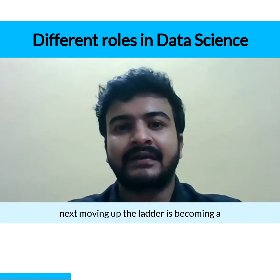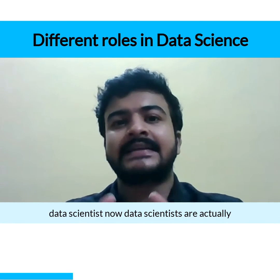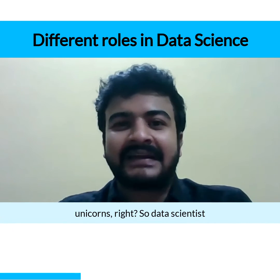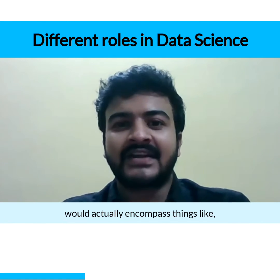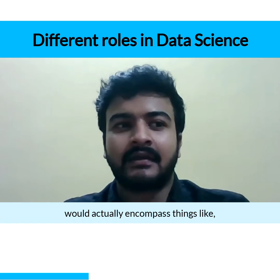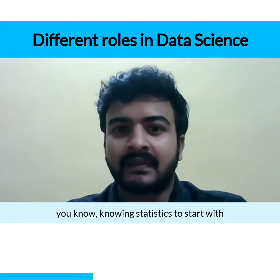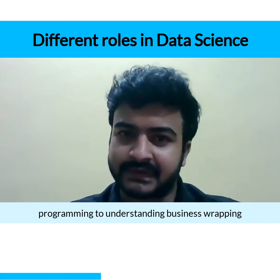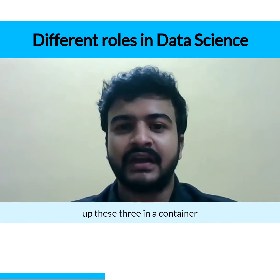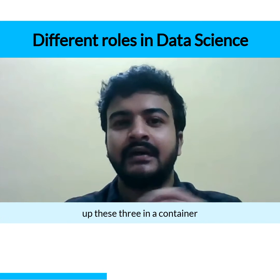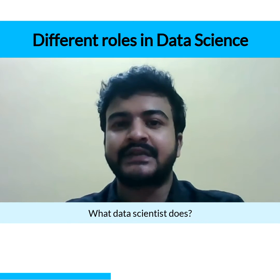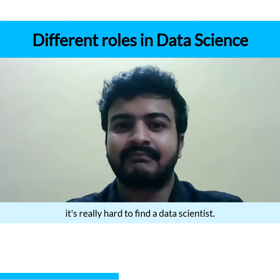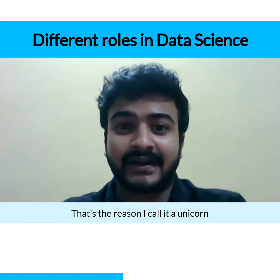Moving up the ladder is becoming a data scientist. Data scientists are actually unicorns — they encompass things like knowing statistics, having decent knowledge of programming, and understanding business. Wrapping up these three in a container is what a data scientist does. It's really hard to find a data scientist, that's the reason I call it a unicorn.